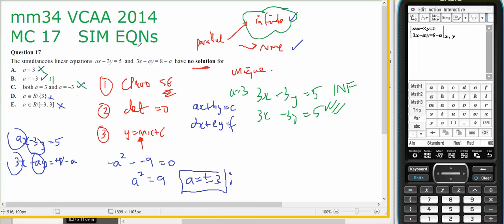If I was to consider a equaling negative 3, that gives me minus 3x minus 3y equals 5. And 3x minus minus, so plus 3y equals 8 minus minus 3. Therefore, 3x plus 3y equals 11, or minus 3x minus 3y equals minus 11. And that's a different equation to this one, even though it's parallel.